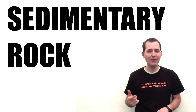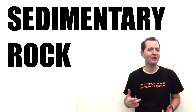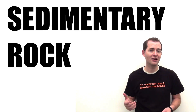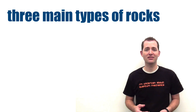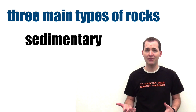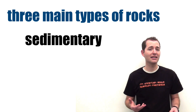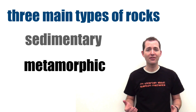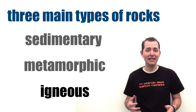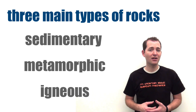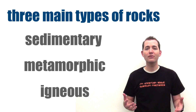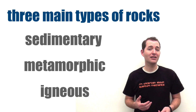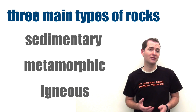What is a sedimentary rock and what makes it unique when compared to other types of rocks? First off, we need to know what the other types of rocks are. There are three general classifications of rocks: sedimentary rocks, metamorphic rocks, and igneous rocks. Each of these types of rocks has their own characteristics, their own ways that they're formed, and their own ways to be identified. We're going to look at sedimentary rocks.